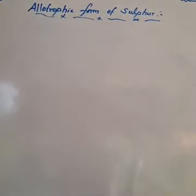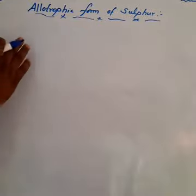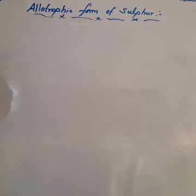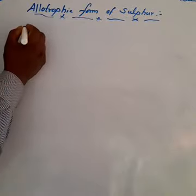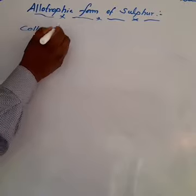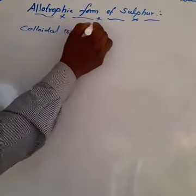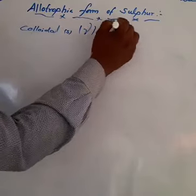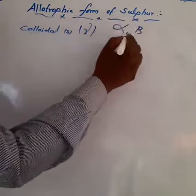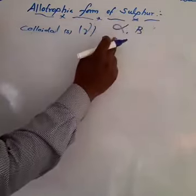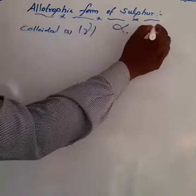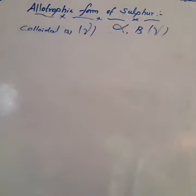The amorphous allotropic forms include plastic sulfur (gamma sulfur), milk of sulfur, and colloidal sulfur. Alpha and beta sulfur belong to the crystalline form, while gamma sulfur is classified as amorphous sulfur.